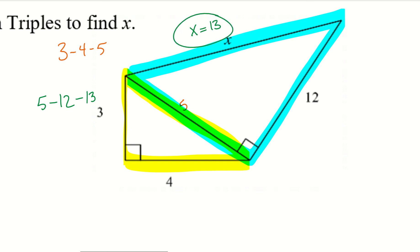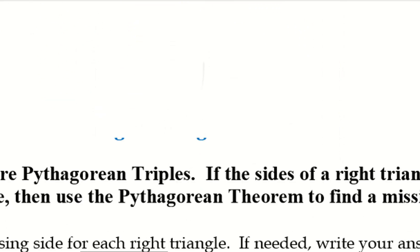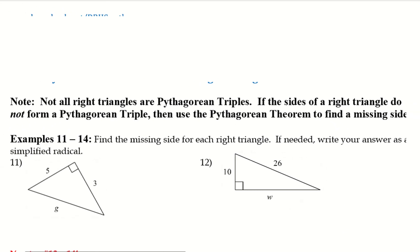So, once again, you can use the Pythagorean theorem. We could have done 3 squared plus 4 squared equals c squared. Find out that side is 5. And then do 5 squared plus 12 squared equals x squared. And find that x is 13. If you remember, start to remember these Pythagorean triples, some of these problems become a lot simpler to do and a lot quicker. Now, with that in mind, not all right triangles are Pythagorean triples. If the sides of the right triangle do not form a Pythagorean triple, then use the Pythagorean theorem to find the missing side.